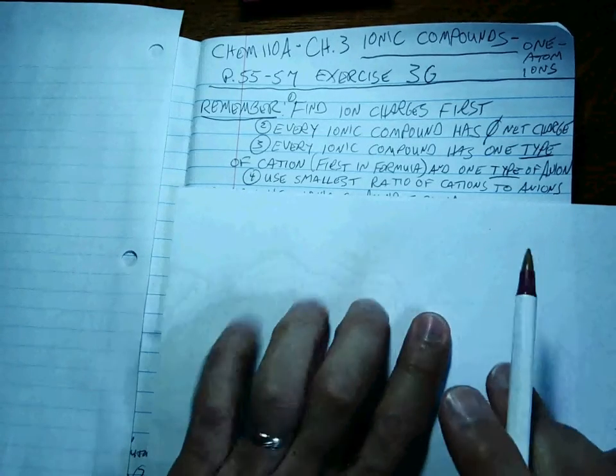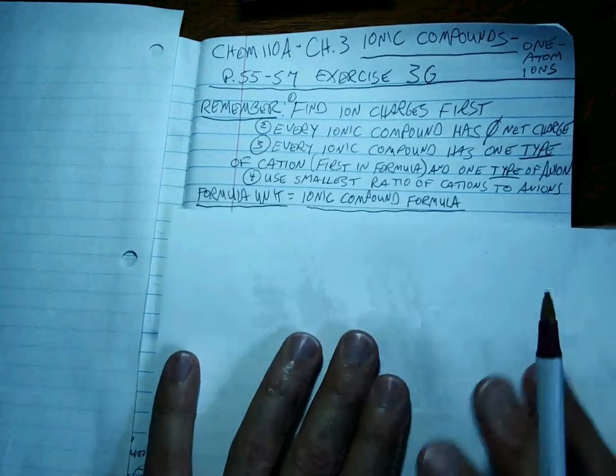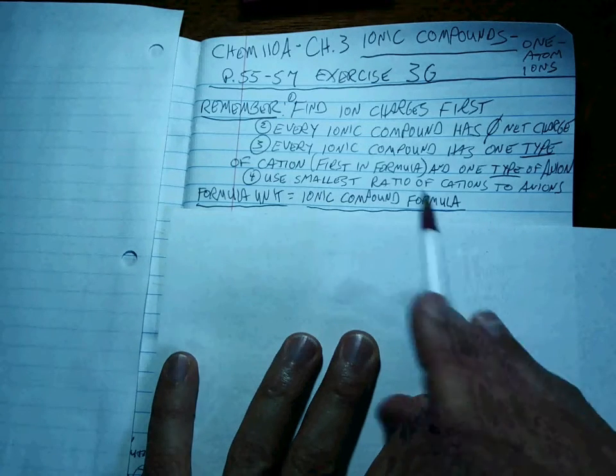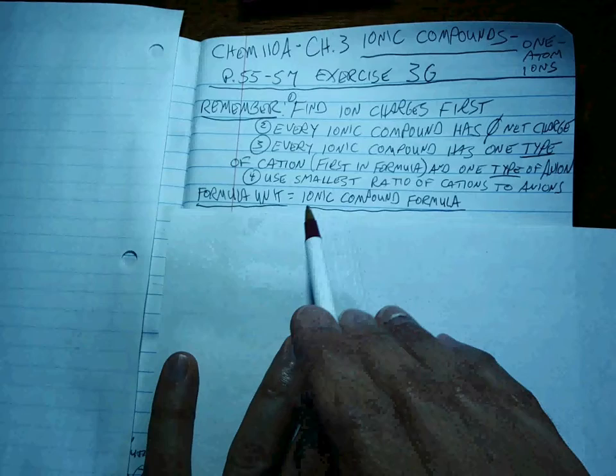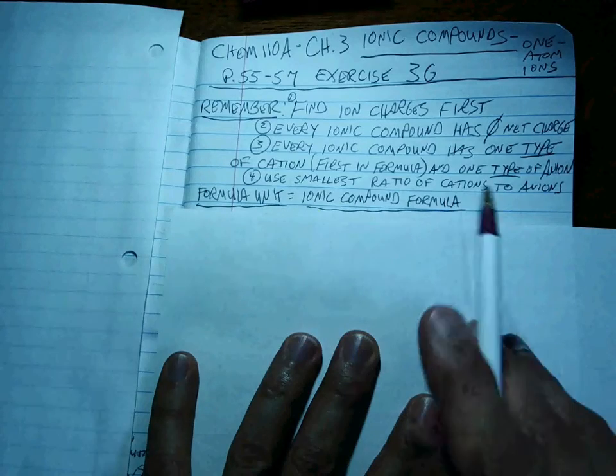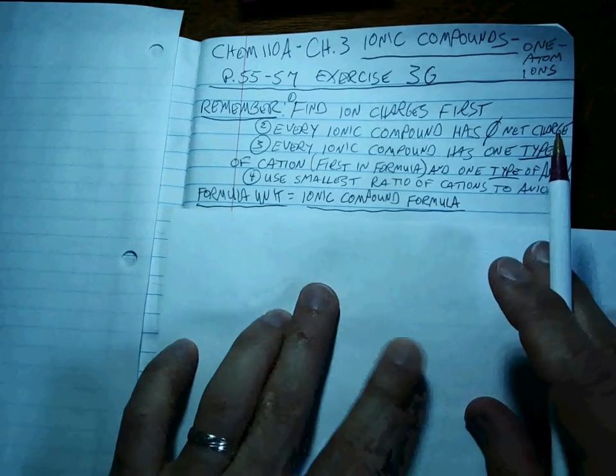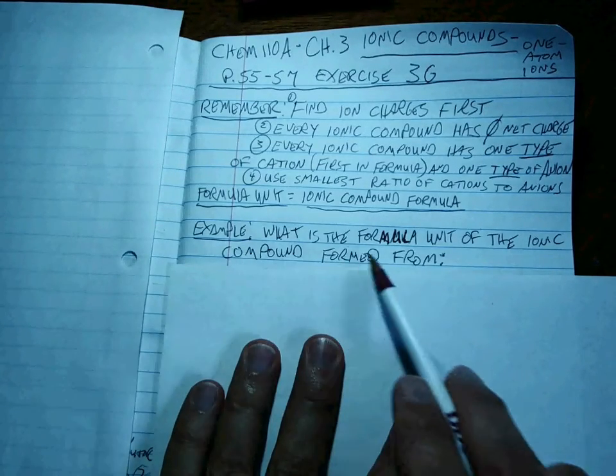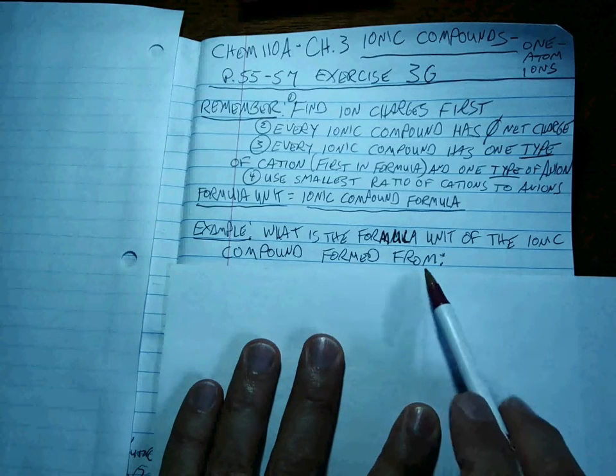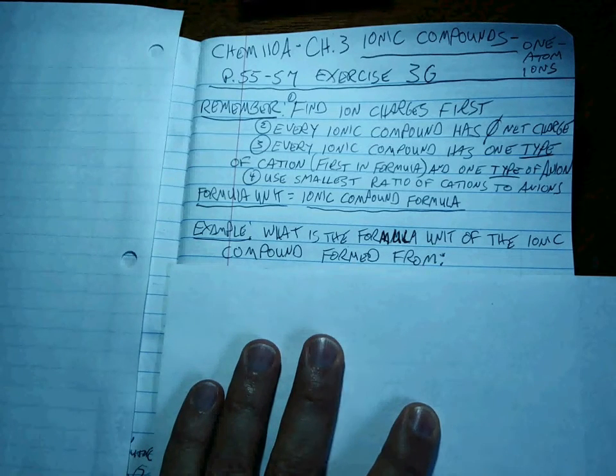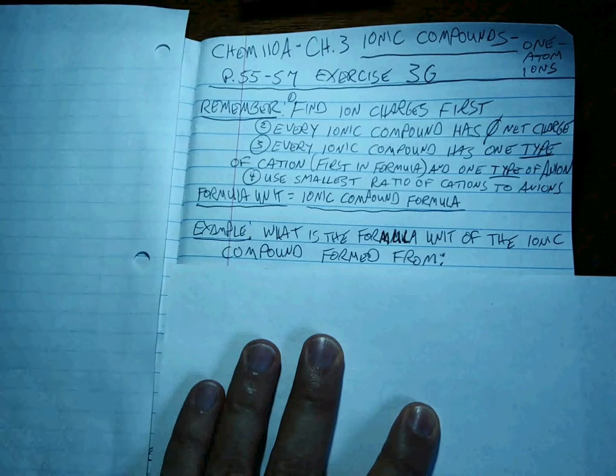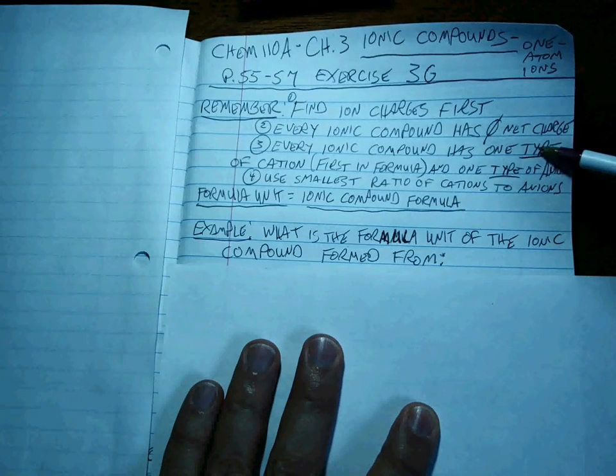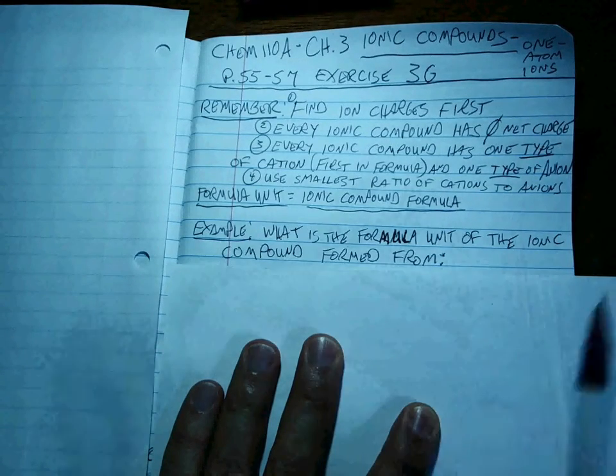And then we always have to use the smallest ratio of cations to anions for the formula to be correct. Now, you're going to encounter a term that you may not be familiar with. It's called a formula unit, but it's real simple. It's just an ionic compound's formula. So when you think of formula unit, think of an ionic compound. So how do we go about our business? The question that will be asked is, what is the formula unit of the ionic compound formed from? And then we're going to give you stuff, and your job is to look at what we have and see what the ionic compound is that has a zero net charge with one type of cation and one type of anion. That's the smallest ratio.